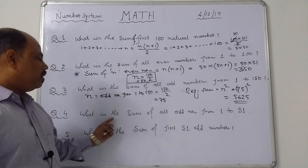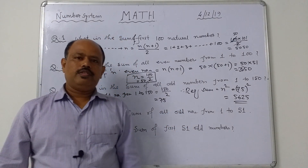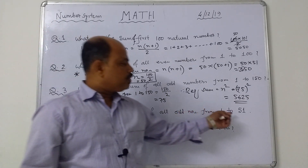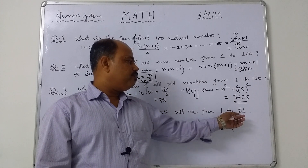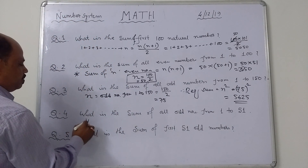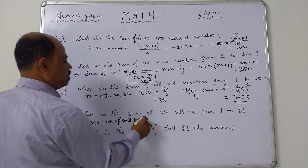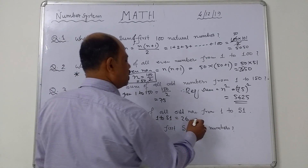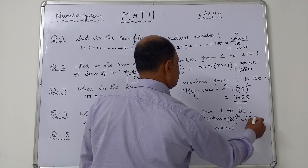Question number 4: what is the sum of all odd numbers from 1 to 51? At first you have to find the value of n. From 1 to 50 there are 25 odd terms, and 51 is still an odd number, so the total number of odd terms is 26. Therefore the required sum is 26 squared, that is 676.